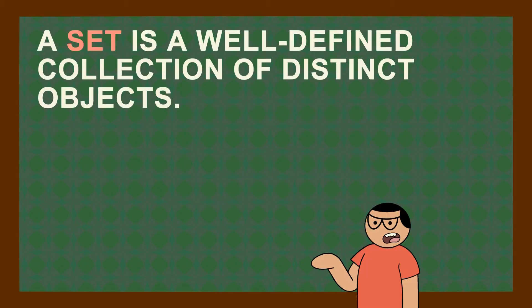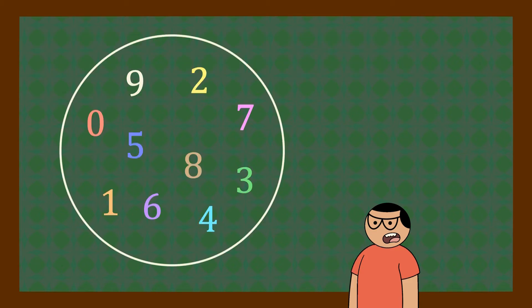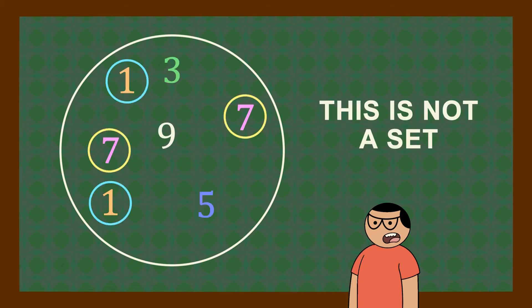A set is a well-defined collection of distinct objects. The objects in a set must be clear and unambiguous. This one is a set of digits but this one is not a set because 1 and 7 appear twice.